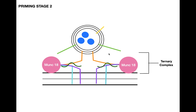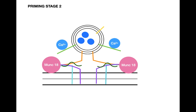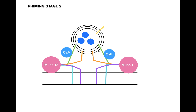We then need an initiator signal — and this signal is calcium. Calcium comes in and binds to synaptotagmin on the vesicle. When calcium binds, synaptotagmin displaces complexin and binds to the complex in its place.